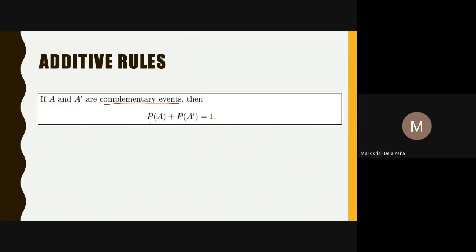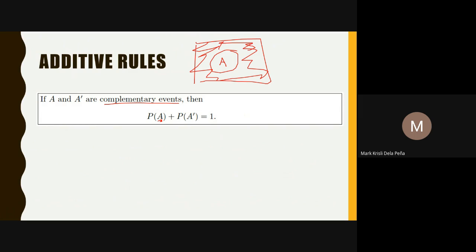In general, if we have event A in a universal set, the outcomes not part of A are the complement of A. The probability of event A plus the probability of its complement equals the probability of the sample space, which is one.